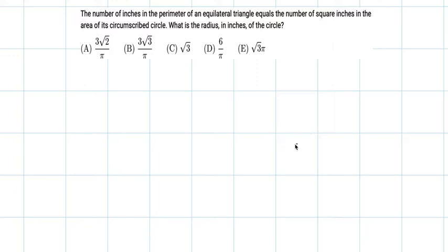So first we're going to draw this out. We have our equilateral triangle and a circumscribed circle goes through each of the vertices of that equilateral triangle to look something like that.